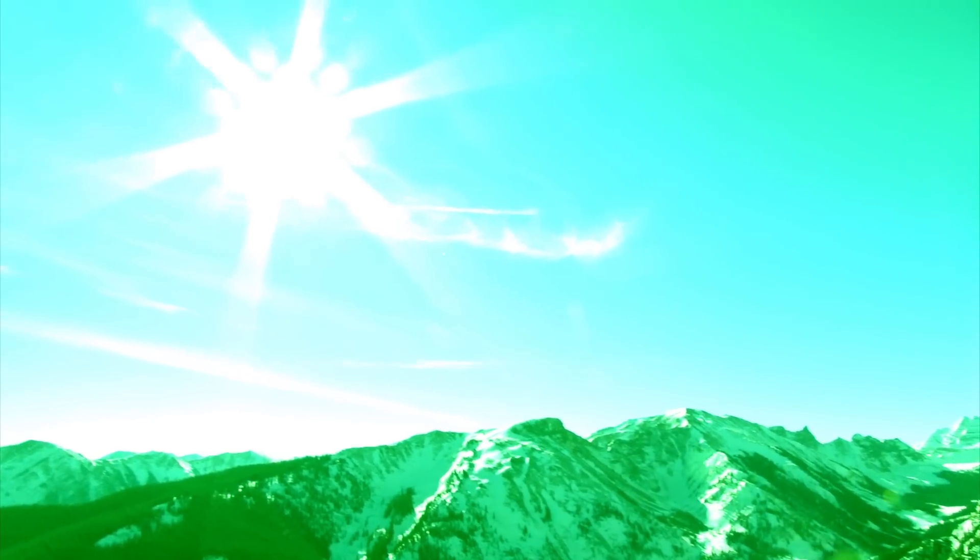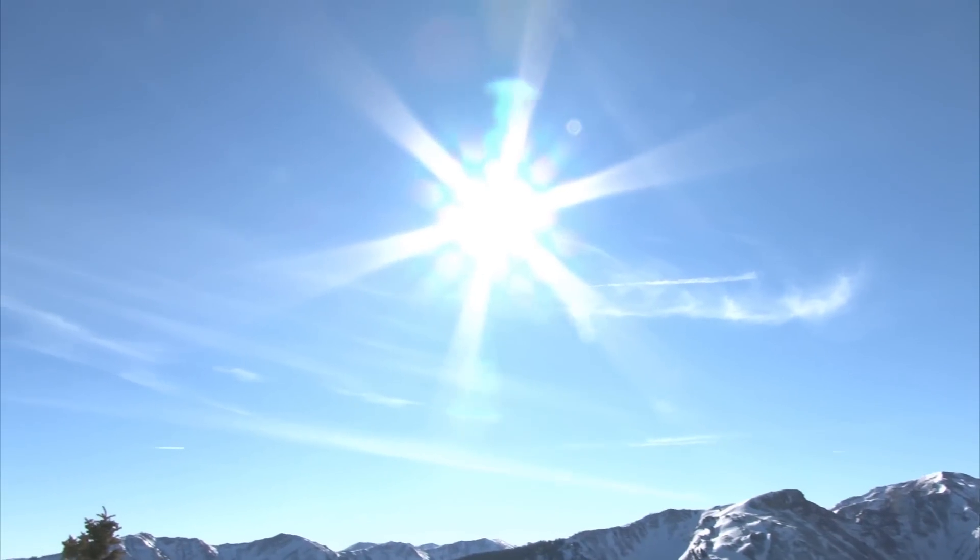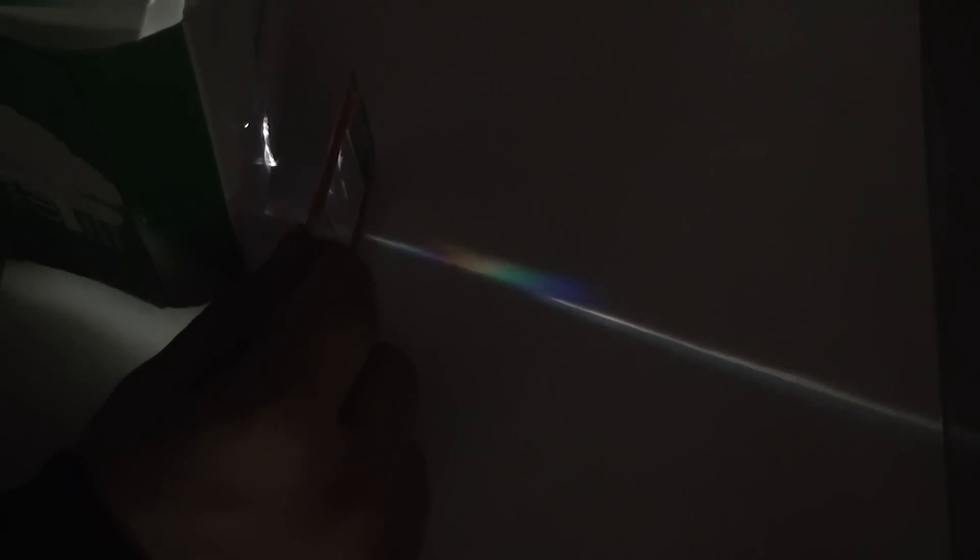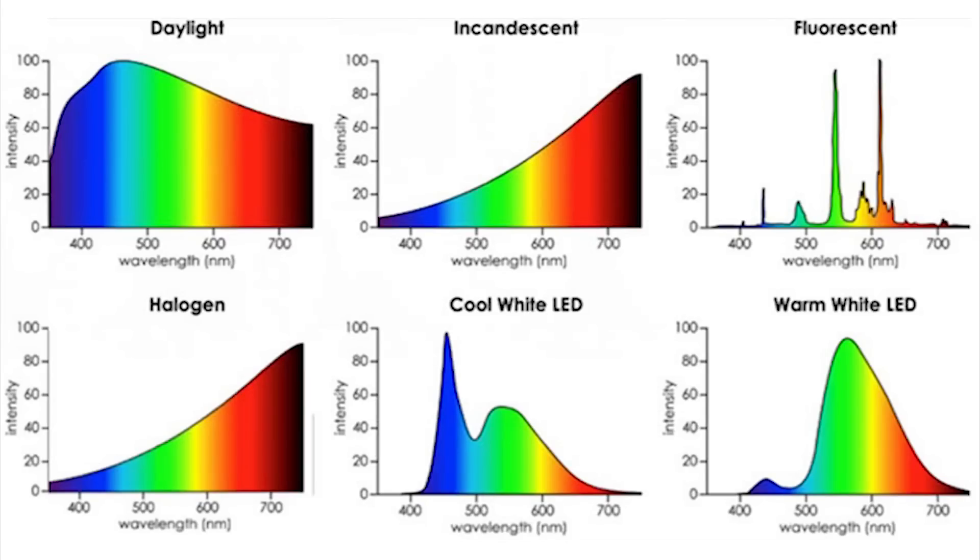But we don't see it as greenish, we see it as white. So how do we know that there's more green? Well, we use prisms or other methods of splitting the normally mixed white light into all the various colors, and then measure the intensities of each. This is called spectrometry.